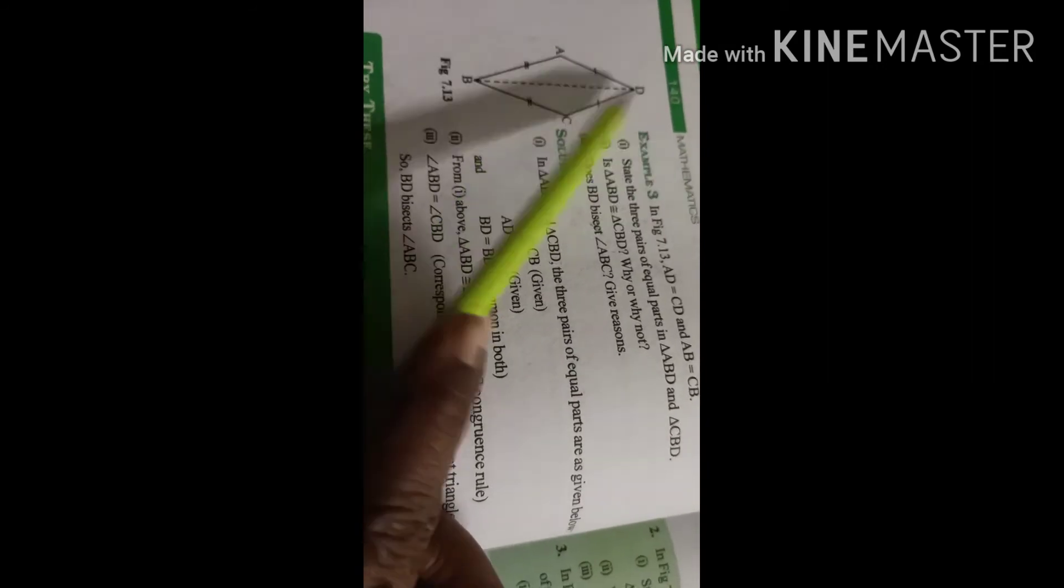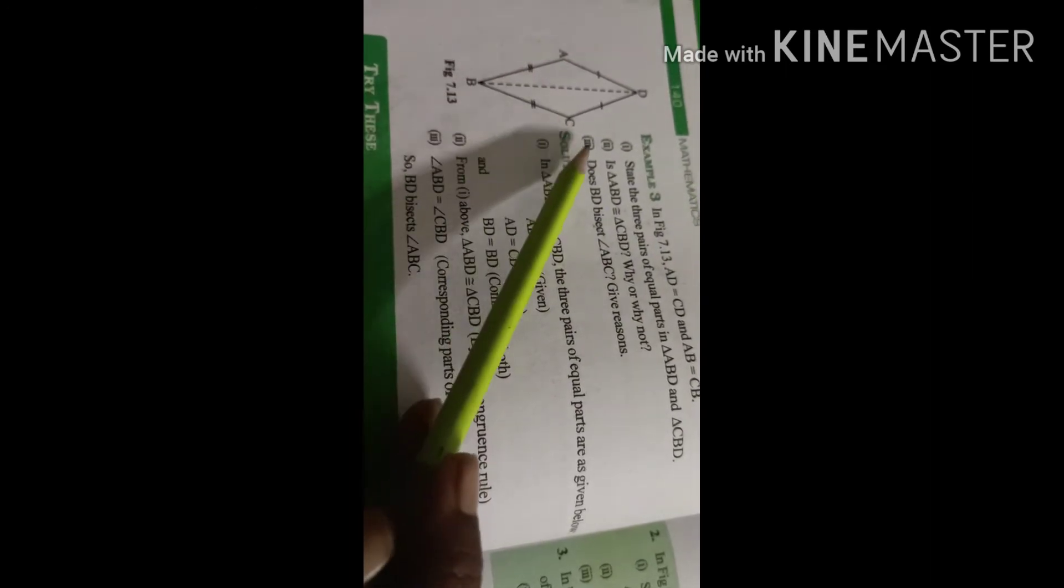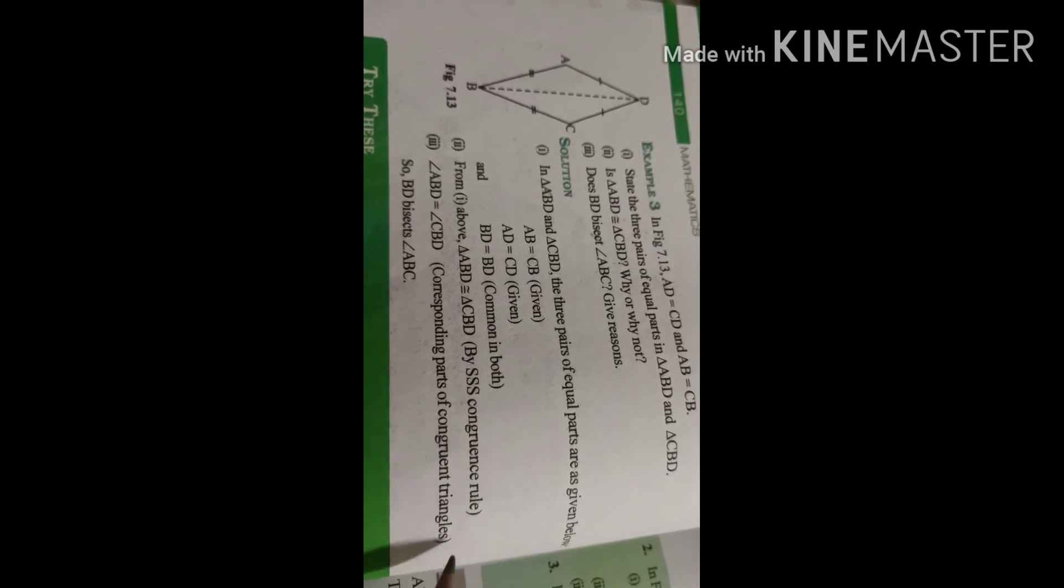First of all, what is given here? AD is equal to DC—first side in both triangles. AB is equal to BC—second side. And BD is common in both. All the three sides are equal. Triangle ABD is congruent to triangle CBD by side-side-side congruence rule.